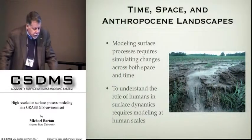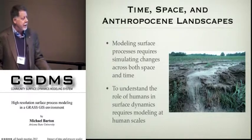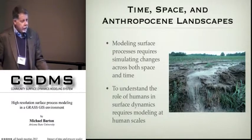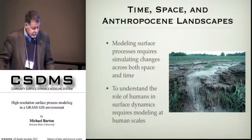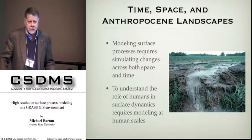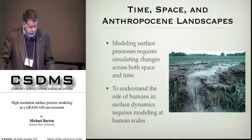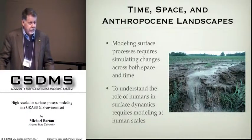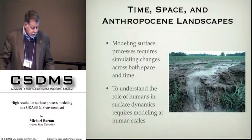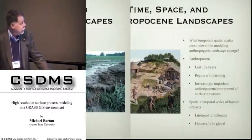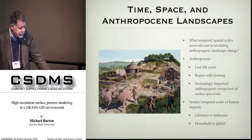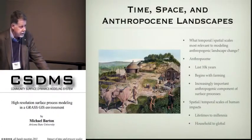Modeling surface processes requires simulating changes across both space and time, of course. The work that we're doing focuses on the role of humans in transforming the Earth's surface. Like many of the presentations we've heard over the last several days, this involves integrated modeling of landscape evolution, sediment transport, and terrestrial morphodynamics. But we explicitly seek to do this at a human scale — so what are we talking about in terms of spatial and temporal scales most relevant to modeling anthropogenic surface processes and landscape change?